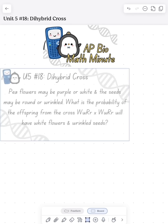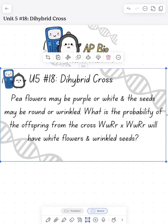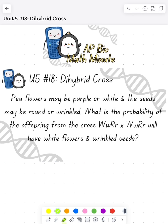Today we're doing a Bio Math Minute looking at a dihybrid cross. Flowers can either be purple or white and seeds can either be round or wrinkled. If we did a dihybrid cross, what's the probability of being white and wrinkled?